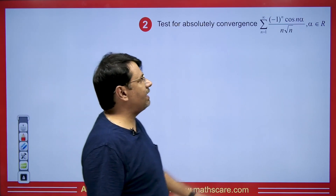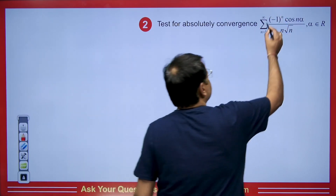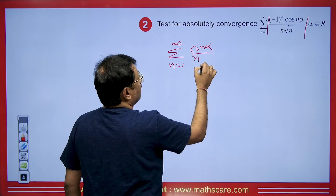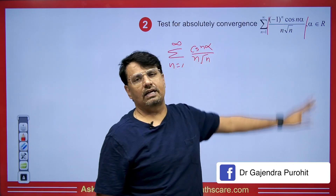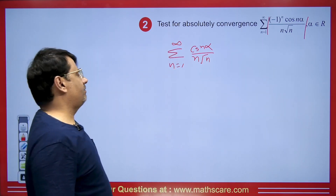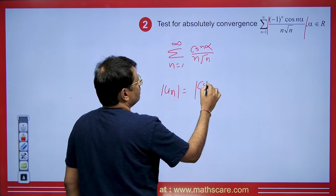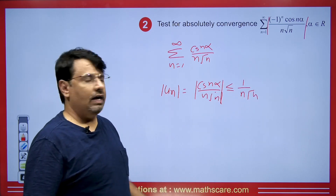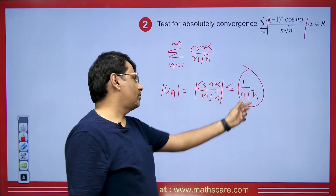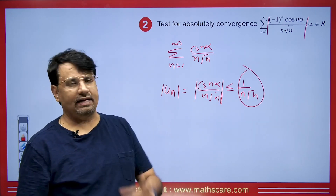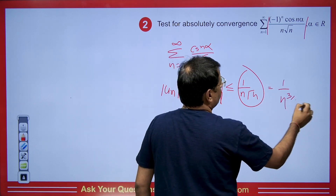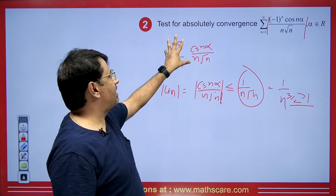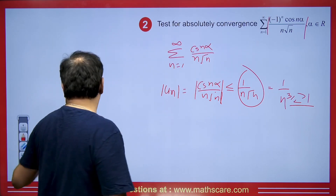Let's see another question. When asked whether a series is absolutely convergent, take the modulus of the series. If we take the modulus, the series becomes the sum from n = 1 to infinity of |cos(nα)| / (n√n). We know that |cos(nα)| ≤ 1, so |uₙ| ≤ 1/(n√n) = 1/n^(3/2). Since the p-series with p = 3/2 > 1 is convergent, by the comparison test the modulus series is also convergent. Therefore the original series is absolutely convergent.